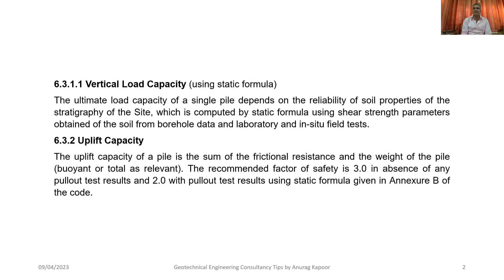The uplift capacity of a pile is the sum of the frictional resistance and the weight of the pile, which should be taken as buoyant or as relevant. The recommended factor of safety is three in the absence of any pullout test results for calculating uplift capacity; otherwise it should be taken as two if pullout tests are conducted at the site.